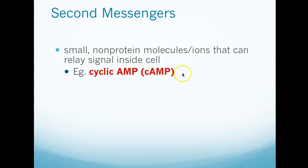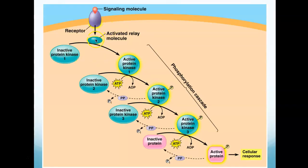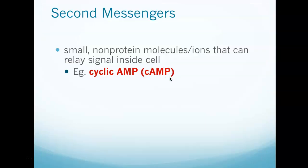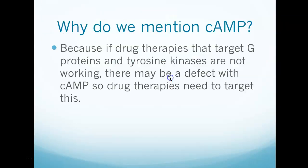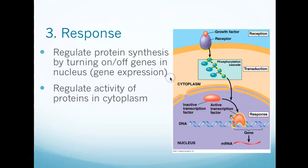The last part of cell communication is the response. The relay molecule is the second messenger — cyclic AMP is our example — and it kicks off the phosphorylation cascade. The response is either going to activate the nucleus to transcribe and translate something, turn some genes on and off, or it's going to activate an enzyme.